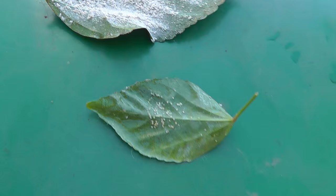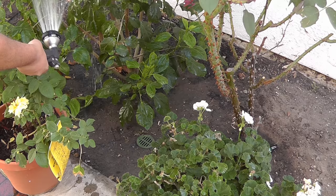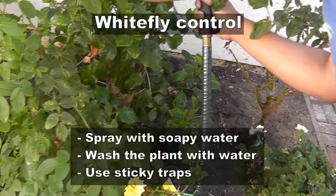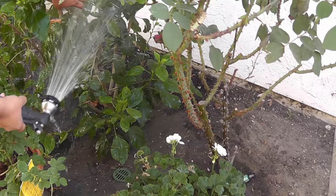Whiteflies are soft-bodied insects that do a lot of damage to leaves and stems, and they can occur in all plants — edibles or not. The easiest way to get rid of them is to just spray with soapy water, or just take a garden hose and wash your plants. Once they get eliminated, they will not come back.